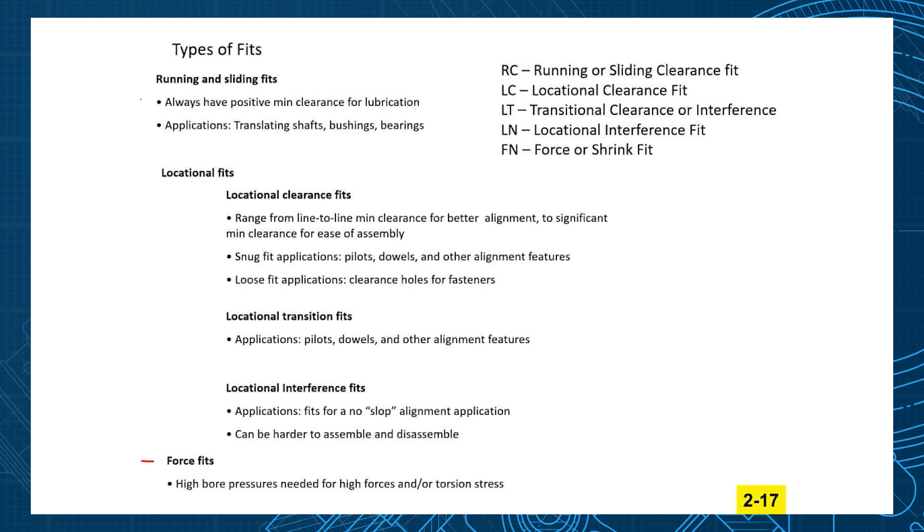A couple notes on these running and sliding fits: they're always going to have some positive min clearance for lubrication. You'll never have a line-to-line fit on a running and sliding fit because you want some room there for some lubrication between the pieces. The locational clearance fits, these are usually pieces that you're going to assemble and disassemble, so pilots, dowels, and other alignment features like that.